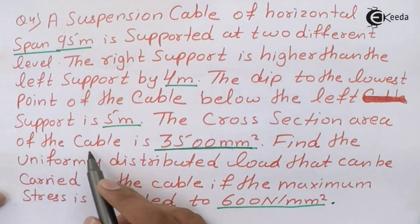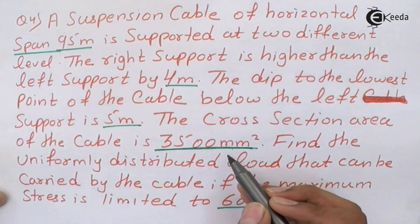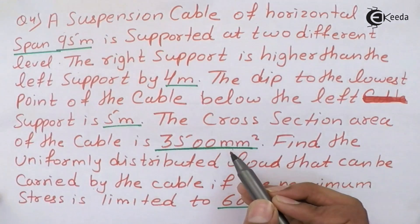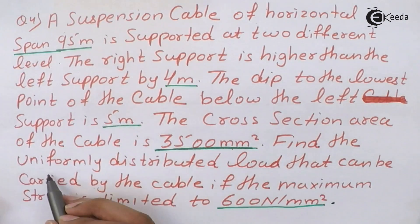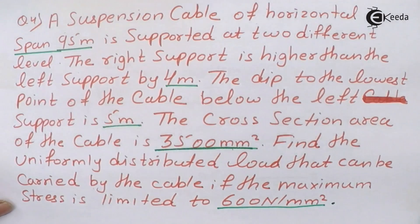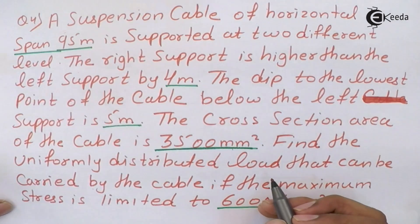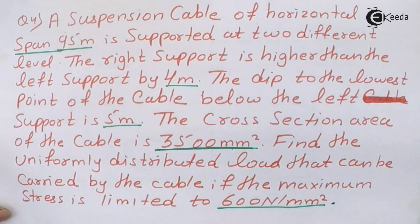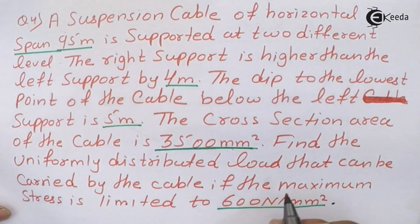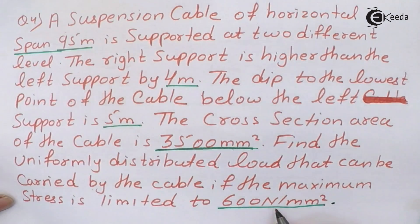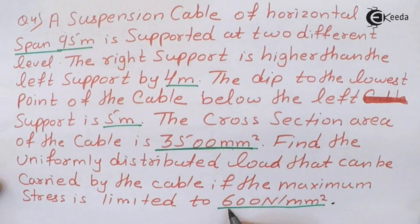The cross-sectional area of the cable is given — this is a new element in this question. Find the uniformly distributed load that can be carried by the cable. In this numerical, you have to find the overall UDL, that is the value P or W.